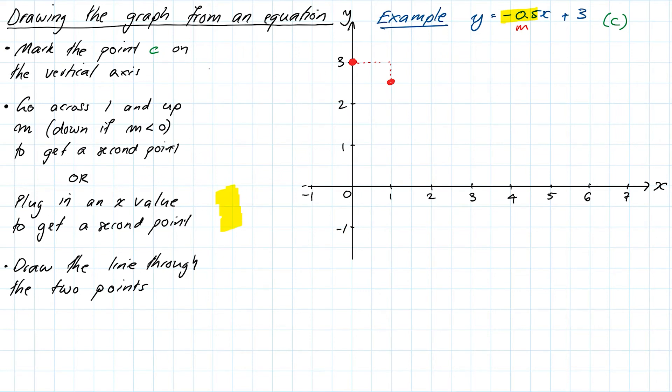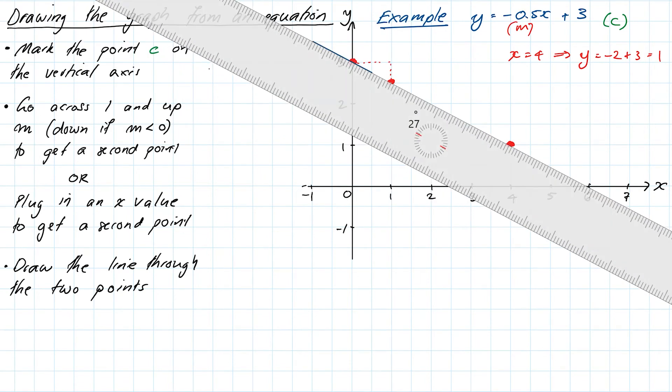Or for example, I could put in x equals 4, which would give me negative 2 plus 3, which would give me 1 as my y value. Those are two different ways of getting the two points. The second one has the two points further apart, which is probably a little bit better for drawing an accurate line. But then we can draw a line by just drawing the straight line connecting the two points up.